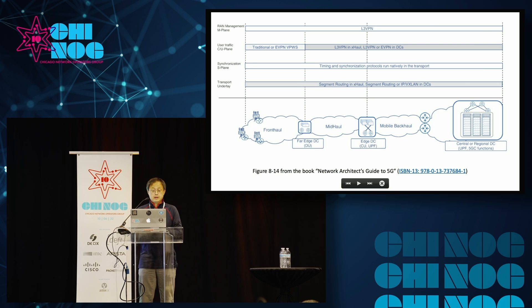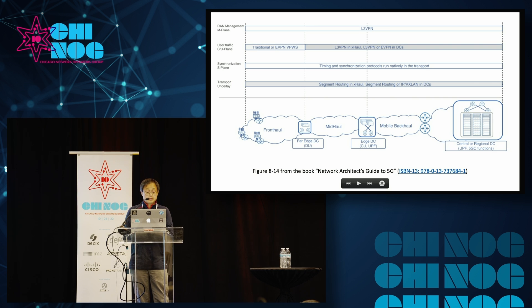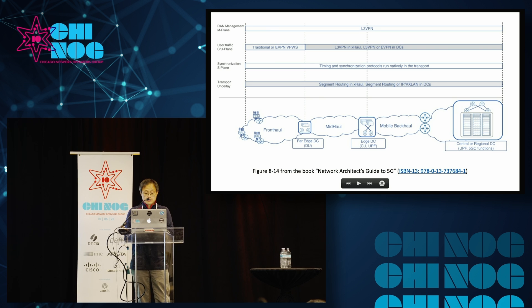This picture shows we have different planes: management, synchronization, user plane, and control plane. At the bottom on the left side, we have cell towers connected to far edge data centers where the gNodeB-DUs are. Then they are connected to edge data centers that house the gNodeB-CUs and distributed UPFs. Finally, on the right side, we have the central data centers with centralized UPF and other centralized 5G core network functions. This picture is from the book 'Network Architect's Guide to 5G.'